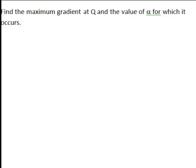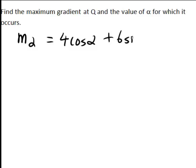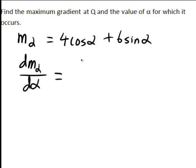Now staying with the same example, a related question could be to find the maximum gradient at Q and the value of alpha for which it occurs. To do this we use the general expression for any angle alpha, and to find the value of alpha that gives the maximum M_alpha value, we start by finding the derivative of M_alpha with respect to alpha, which gives negative 4·sin(alpha) plus 6·cos(alpha).